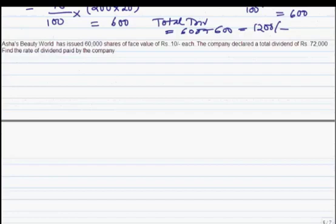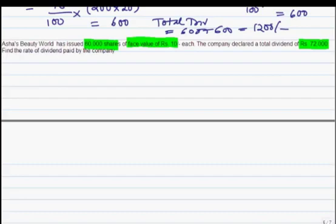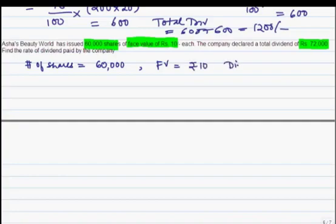Asha's Beauty World has issued 60,000 shares with a face value of Rs 10. The company has declared a total dividend of Rs 72,000. This is a similar problem to the previous one. The given information is: number of shares 60,000, face value Rs 10, and total dividend Rs 72,000. We need to find the rate of dividend.